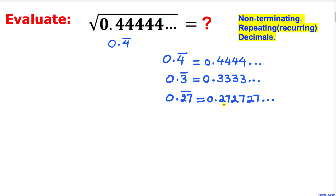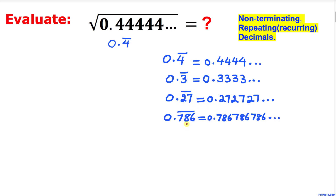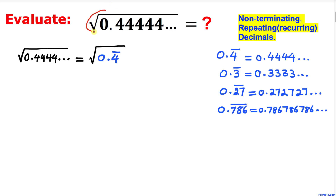When a two-digit number is repeating itself — like 27 27 27 going on and on — we put a bar on top of 27. Similarly, when we have a three-digit number like 7 8 6 repeating on and on, we put a bar on all three digits. So this complicated-looking number can be written in a much simpler form.